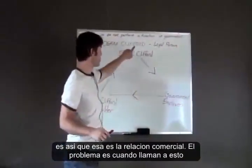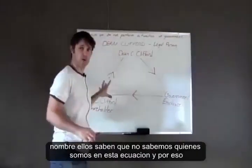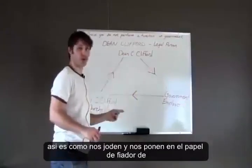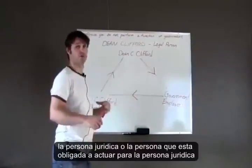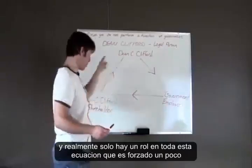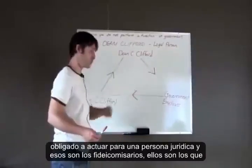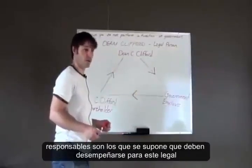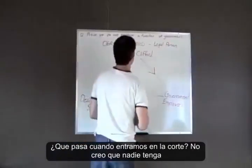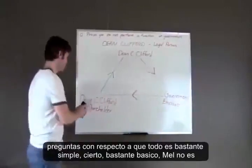The problem is when they call this name, they know we don't know who we are in this equation. Because of that, they screw us over and get us into the role of the surety for the legal person — the person who's compelled to perform for the legal person. Really, the only role in this entire equation that's forced to perform for the legal person is the trustees. They're the ones liable, the ones supposed to perform. So what happens when we walk into court?